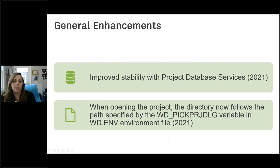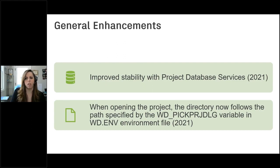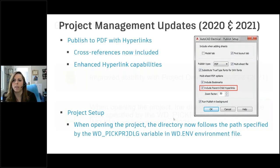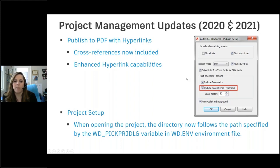Some more general enhancements: the project database that runs in the background fueling everything for AutoCAD Electrical had more stability enhancements added. There were also path updates for the PIC project list that you can configure inside the environment file, so those enhancements were made there. Additionally, publishing to hyperlinks now includes cross-references, and there are more enhanced hyperlink capabilities — not just parent-child as seen in the dialog box, but additional enhancements. Even more directory updates were made with the environment file around project management.